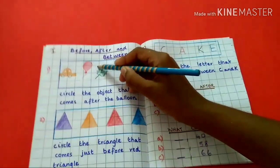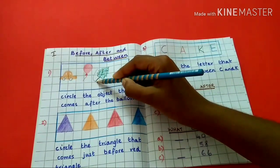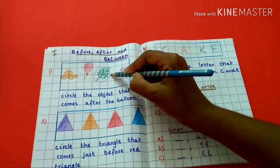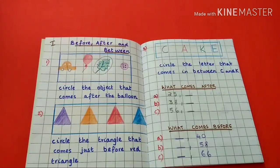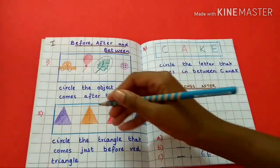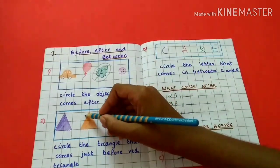Leaf. Circle the triangle that comes just before the red triangle. Orange triangle.